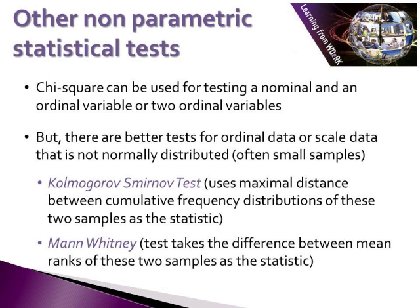The chi-square test for independence is used for relationships between two nominal variables. It can also be used to test relationships between a nominal and an ordinal variable, and between two ordinal variables. However, there are more appropriate tests available for ordinal variables and scale variables that are not normally distributed, which generally applies when dealing with small samples.